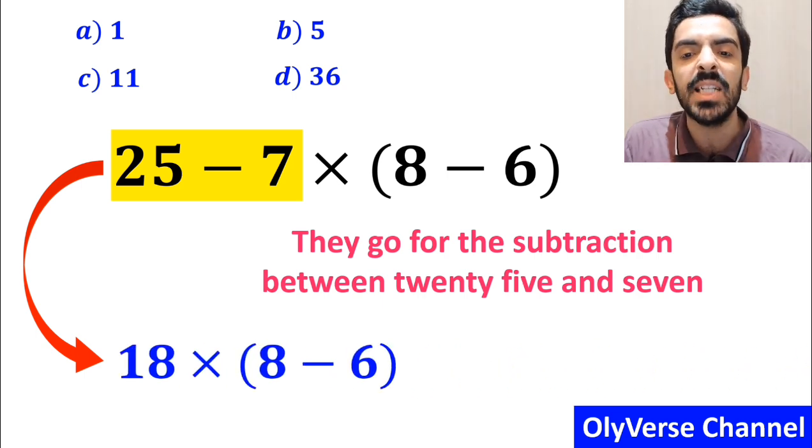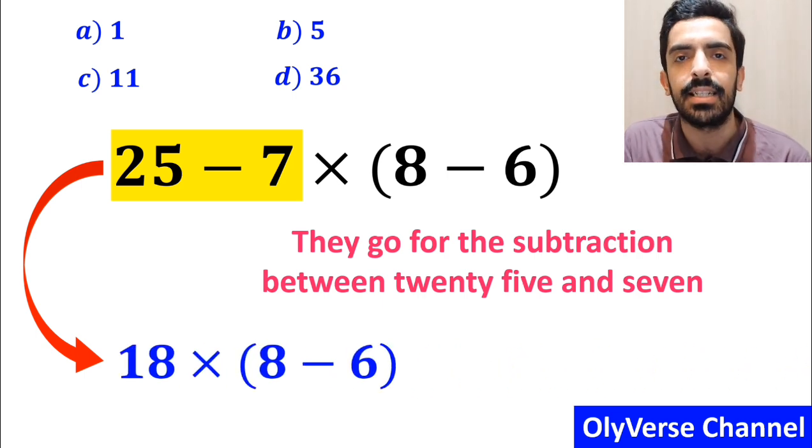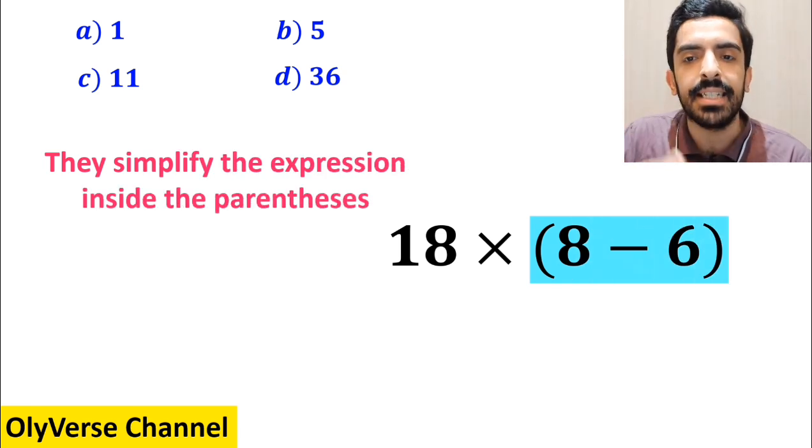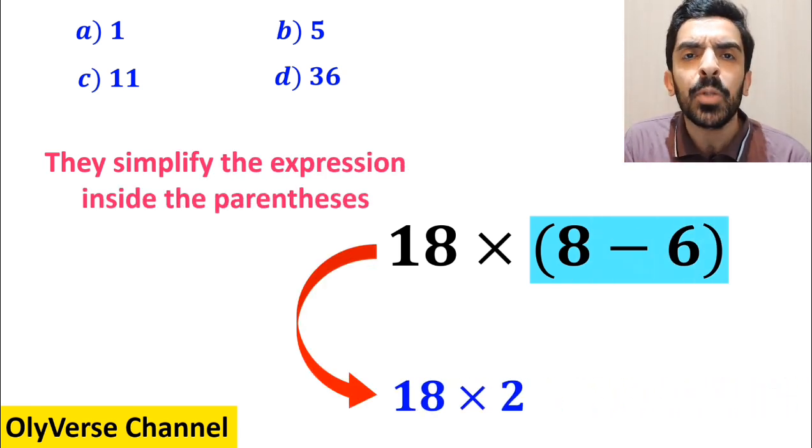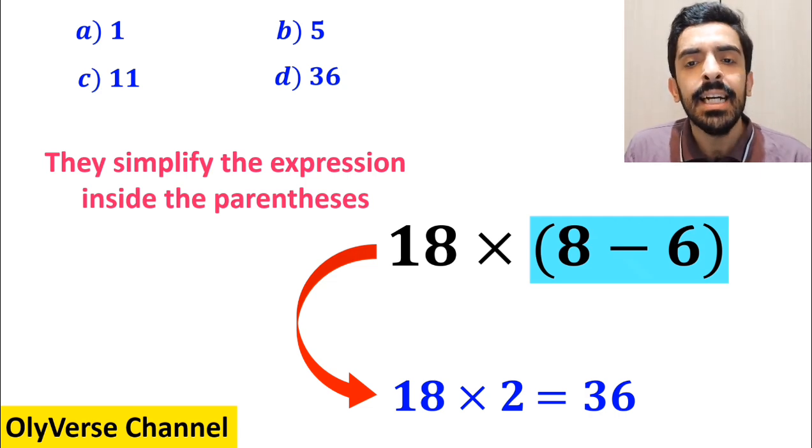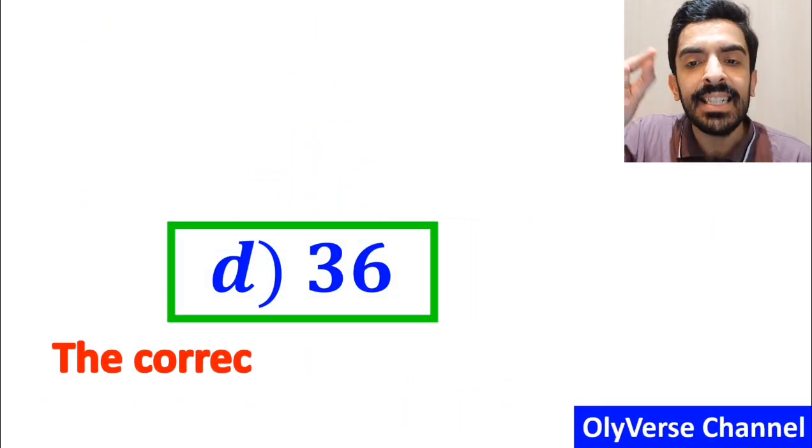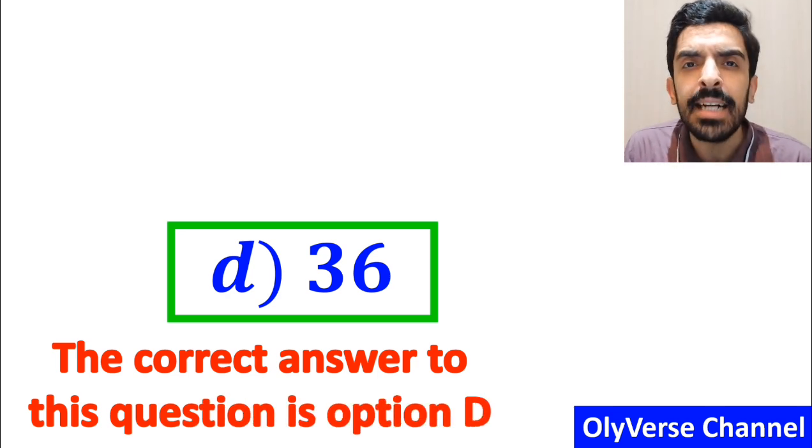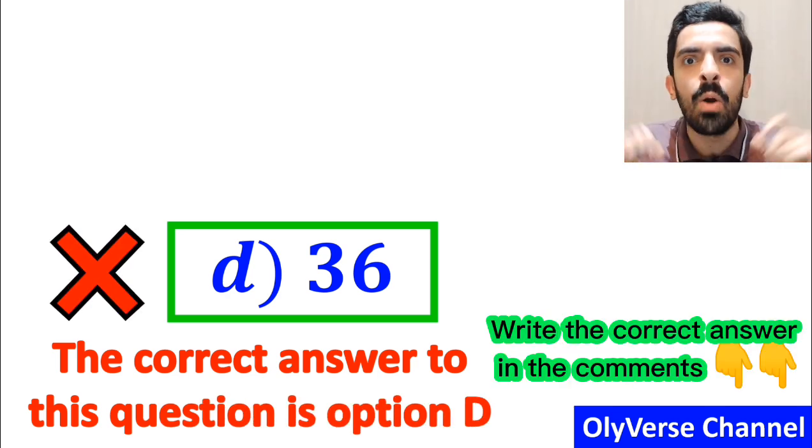And instead of this expression, they write 18 times 8 minus 6 inside the parenthesis. And the final step, they simplify the expression inside the parenthesis and replace it with 18 multiplied by 2, which gives them the answer 36. And immediately they quickly say that the correct answer to this question is option D. However, this answer is absolutely wrong.